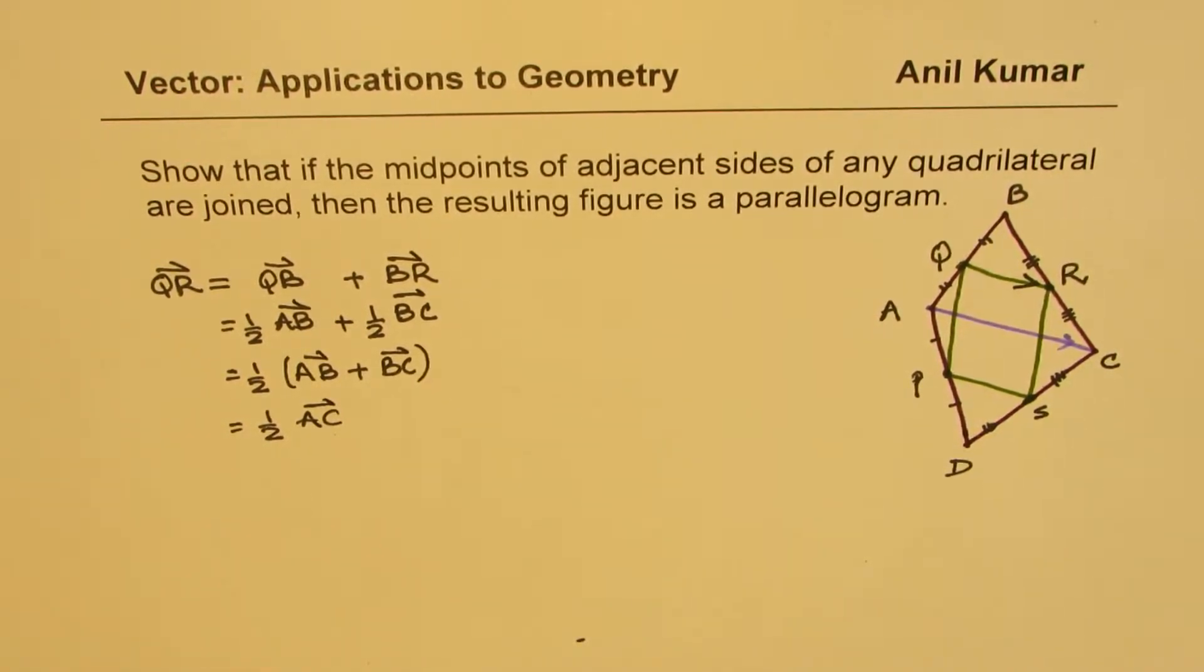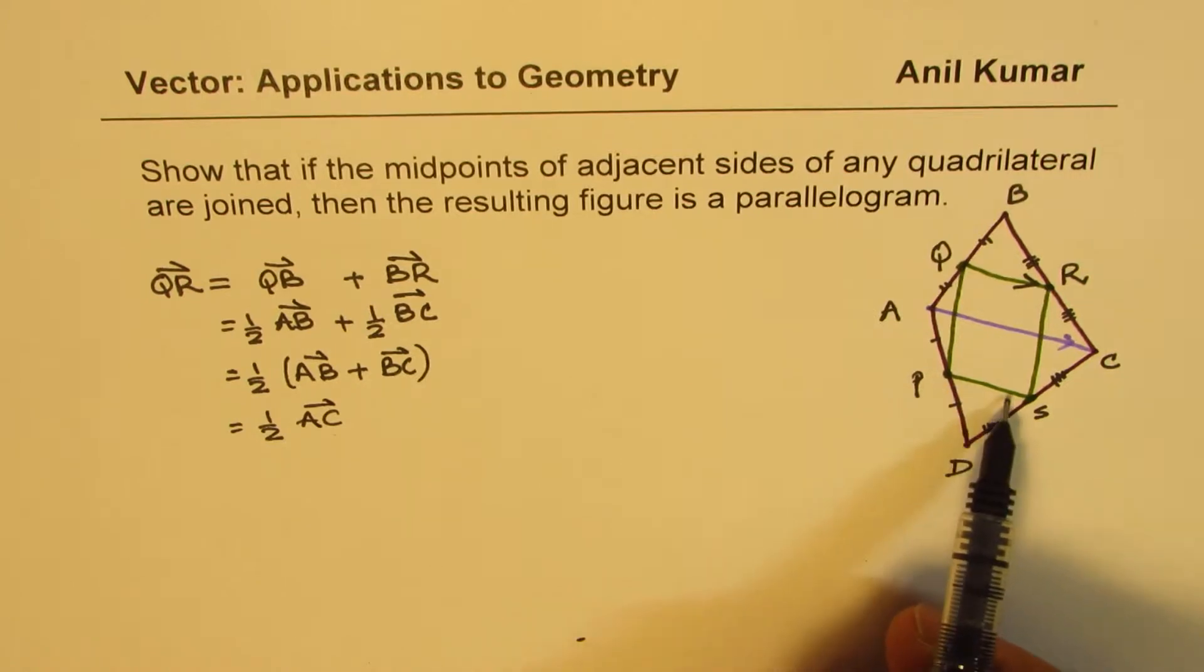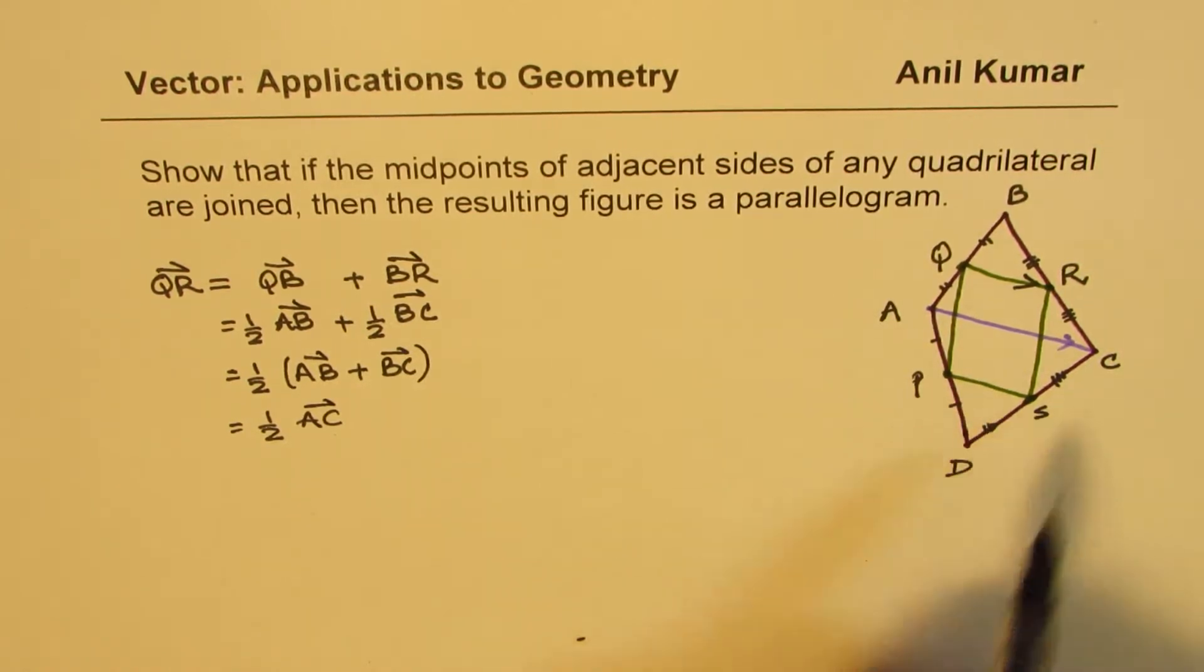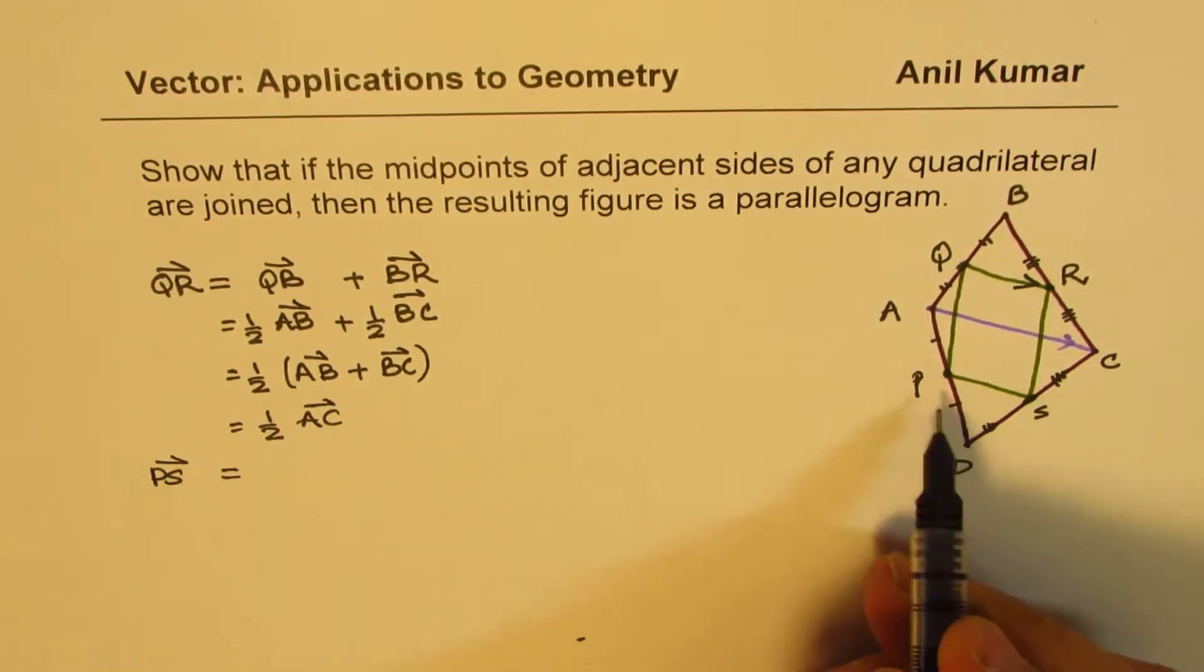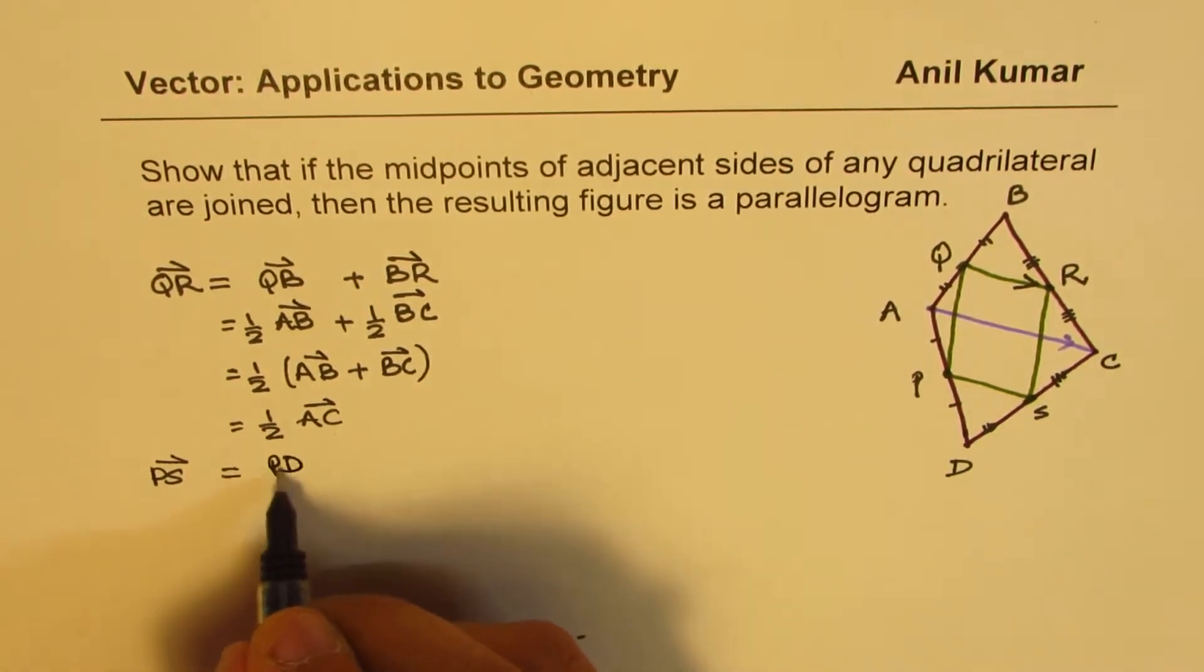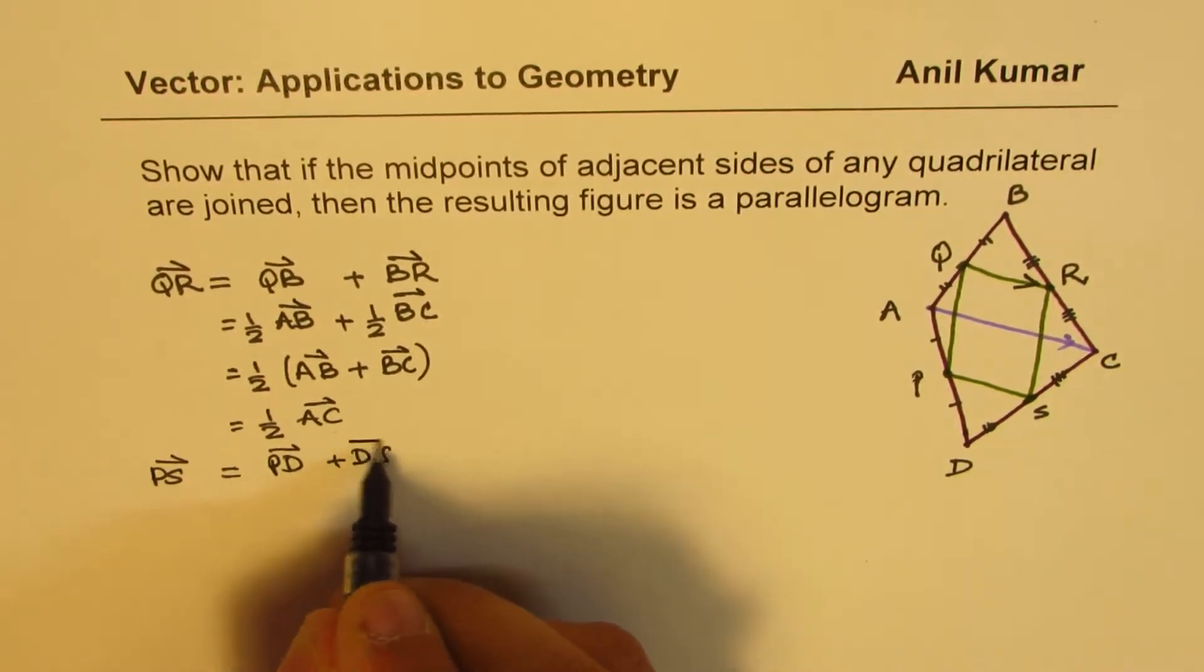Now, let us figure out what is P, S. Is it same as half of A, C? That's what we need to prove. So let's begin with P, S now. So P to S is P to D plus D, S.